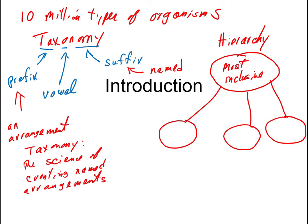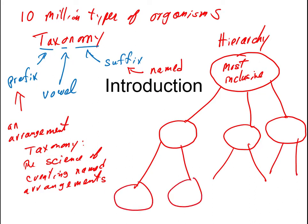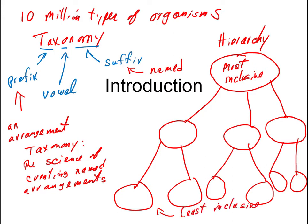Underneath those levels there are other levels, and that could go on quite a while. Someplace at the bottom of that hierarchy we have the least inclusive level. So part of being an arrangement is that we have this hierarchy in our taxonomy of organisms — and the reason we have a hierarchy is because of how these organisms came to be.